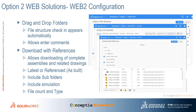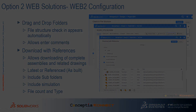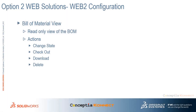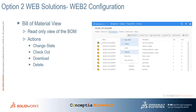In SolidWorks PDM Web 2, users are allowed to access bills of materials of assemblies in read-only format, whether it's an activated or named bill of materials. Users can also check out and download the bill of materials to their local machine, and can participate in the workflow for bill of materials approval.